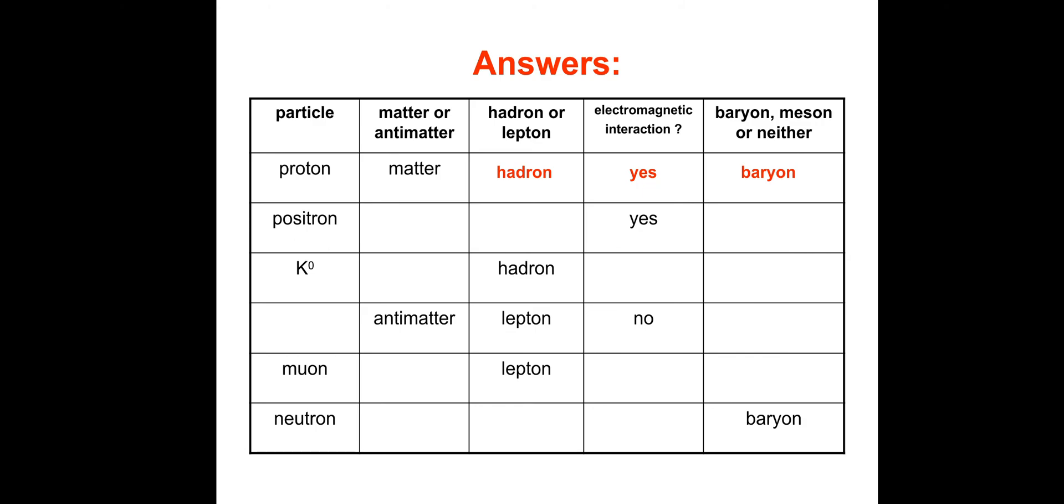Positron: Matter or antimatter? Antimatter, the antimatter equivalent of the electron. Hadron or lepton? It's a lepton, or more specifically an anti-lepton. Electromagnetic interaction? It's charged, so yes. Baryon, meson, or neither? Neither, because it's a lepton.